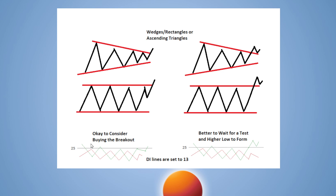On the left side, I have two charts with the DI lines underneath. I use the DI line set to 13, with a 25 line going across. That 25 level is pretty important to me. I want to see if a stock has low enough volatility in its price pattern - if the swings are controlled, then the DI lines are going to stay below the 25 line. During pattern development, whether you're forming a wedge, a rectangle, or an ascending triangle, you want fairly low volatility taking place.